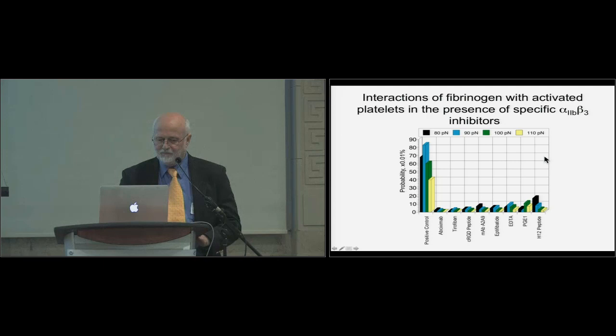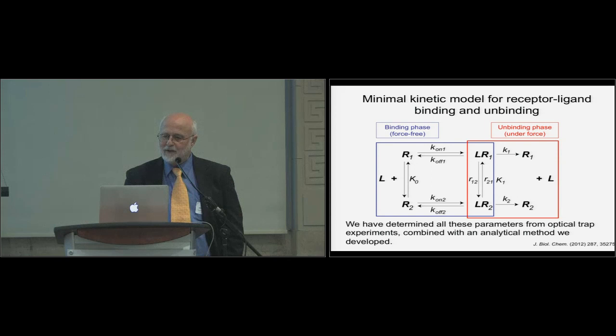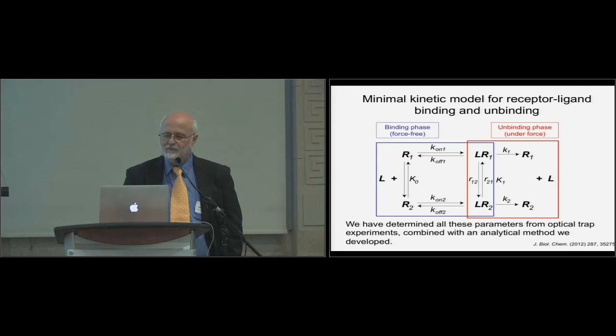These experiments allow us to understand the ligand-receptor interaction at a detailed chemical level. We have shown that there are at least two conformations of the integrin receptor, and that the binding interactions of fibrinogen with the integrin differ between these two conformational states. We have measured all the relevant rate constants of these interactions, though I won't go into detail on that now.